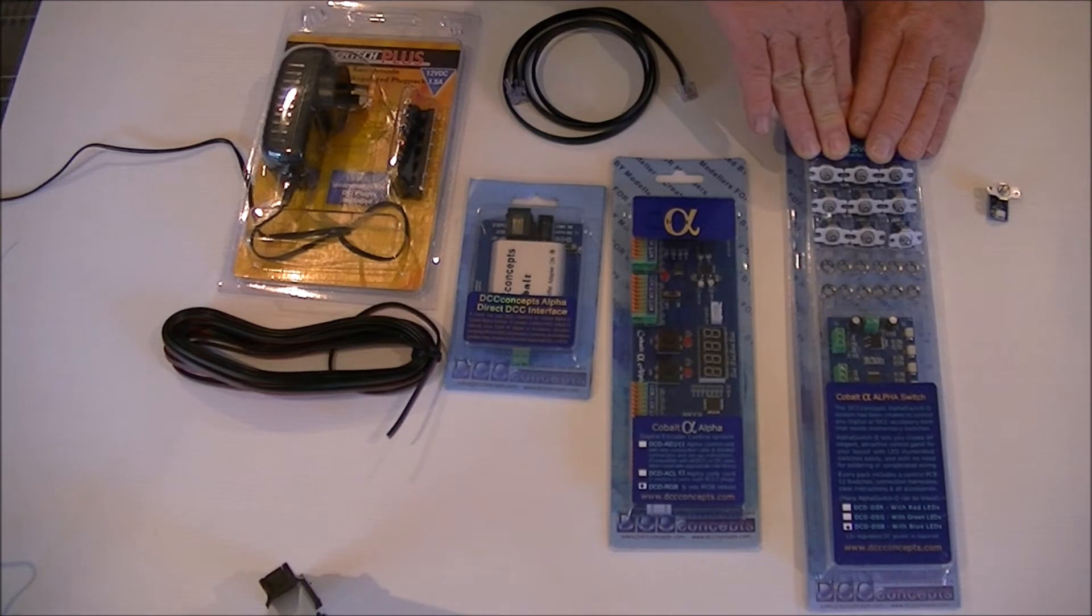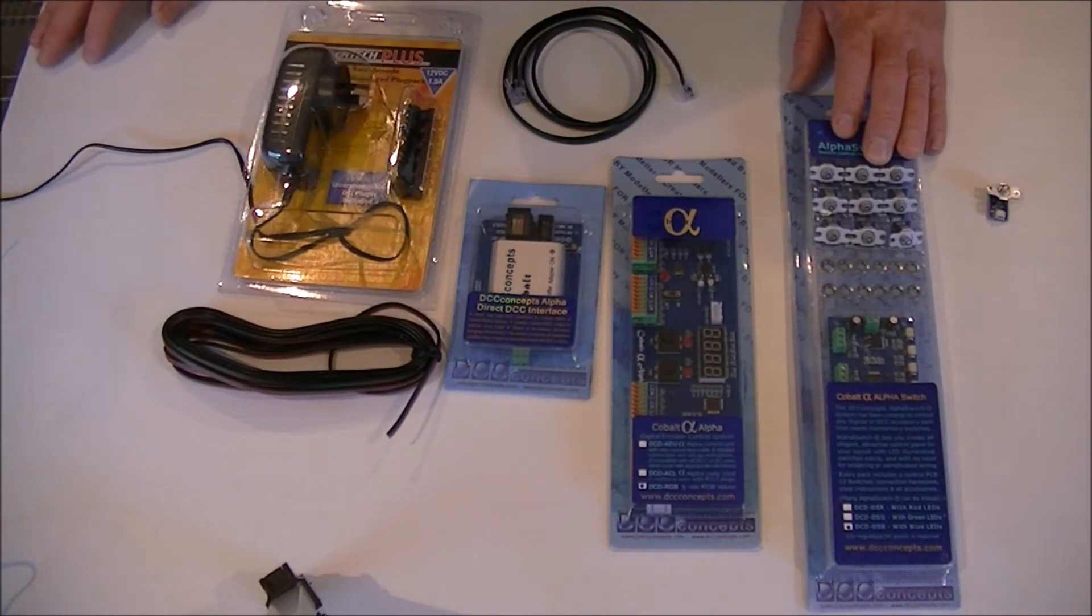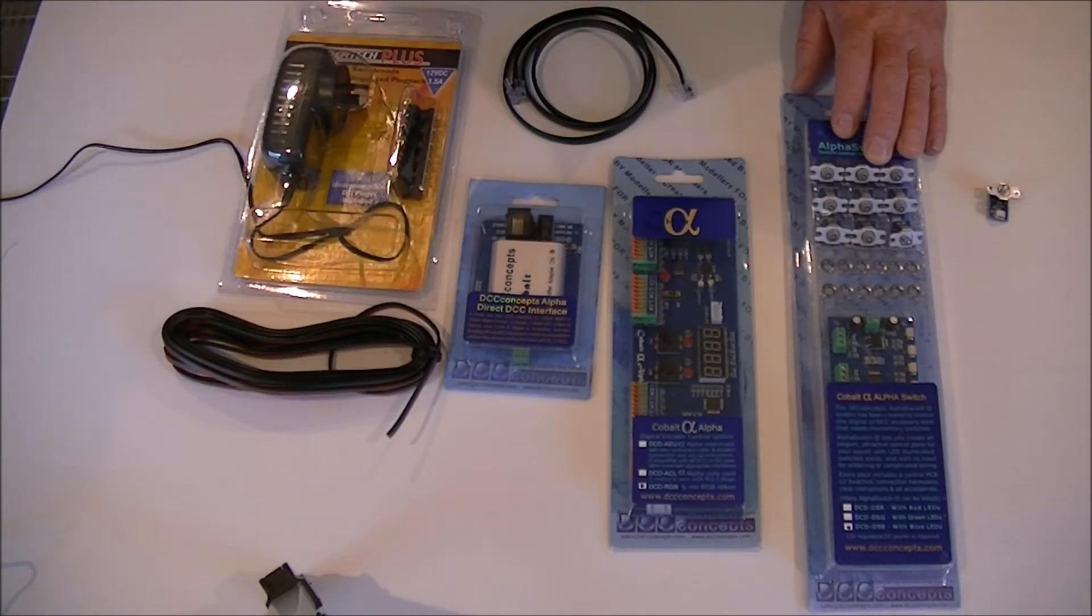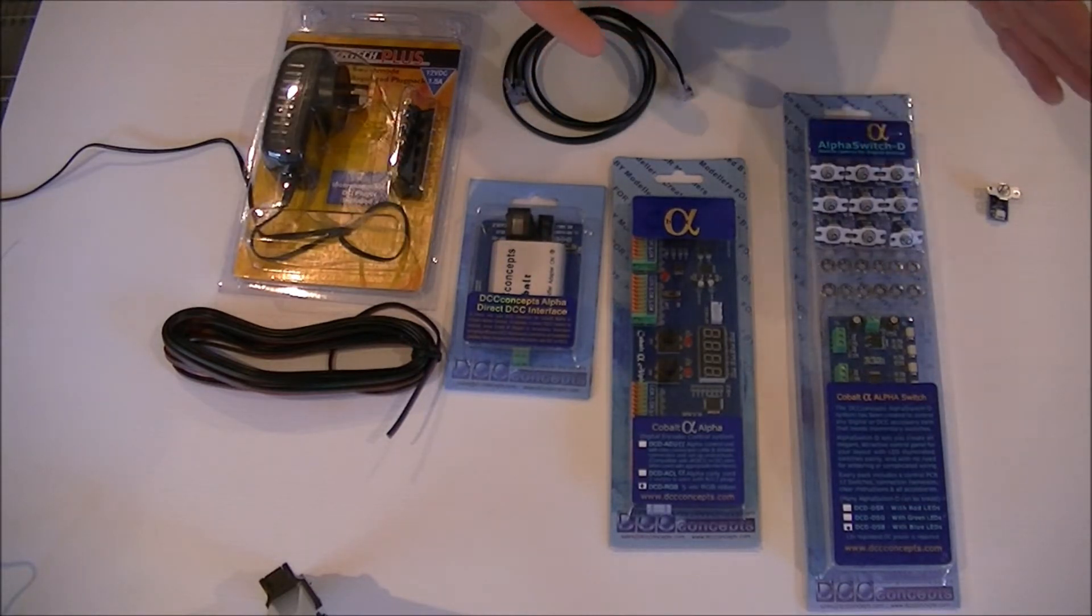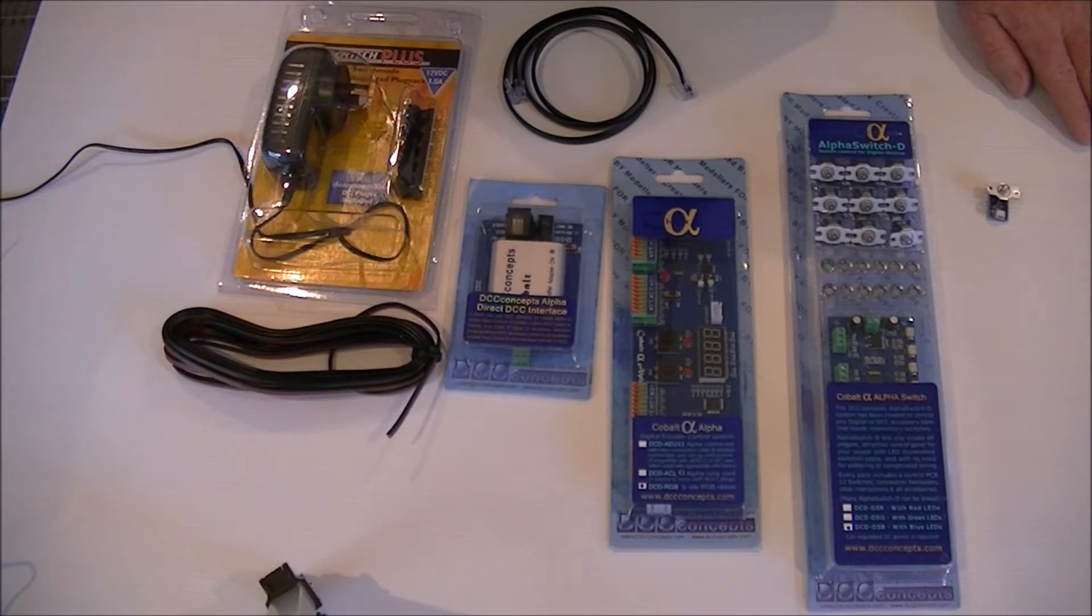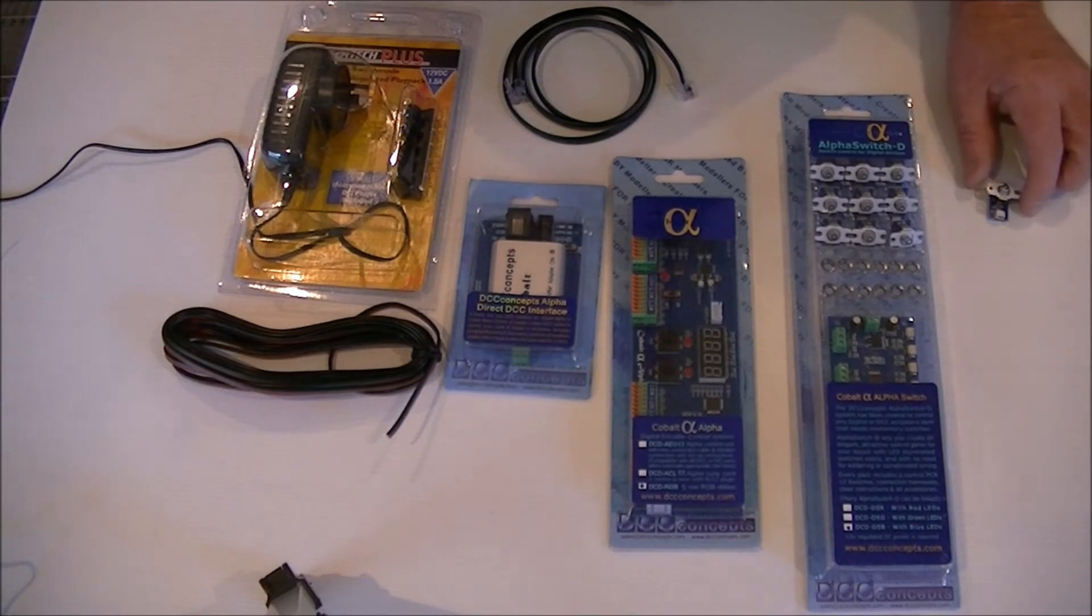Okay, we have our push-button switches. They come in a pack of 12. You need, as a bare minimum, two switches per set of Cobalt motors. So if you've got a single Cobalt motor just changing from one track to another, then you've got two switches. If you've got a turnout, they say you need three switches. One to illuminate which line.